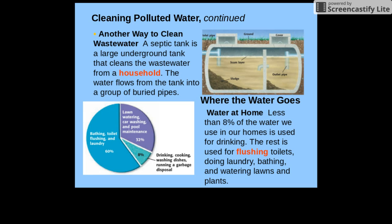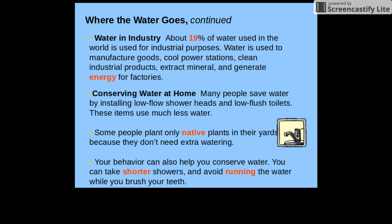Water used in a home is less than eight percent of the total water we use. In the home, water is used for drinking, flushing toilets, doing laundry, bathing, watering lawns and plants, and washing cars. Overall, about 19% of the water used in the world is used for industrial purposes — to manufacture goods, cool power stations, clean industrial products, extract minerals, and generate energy for factories.